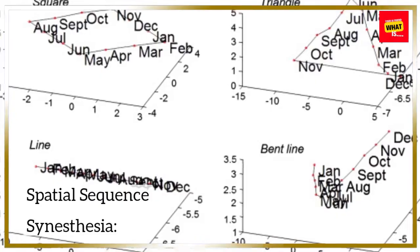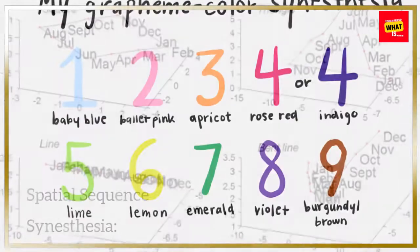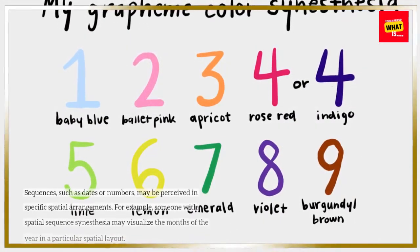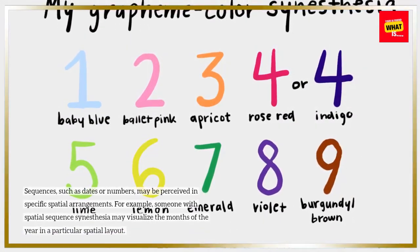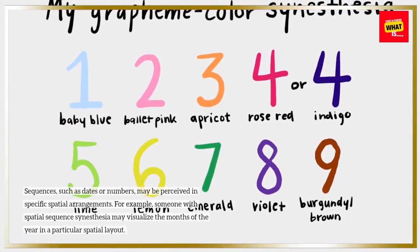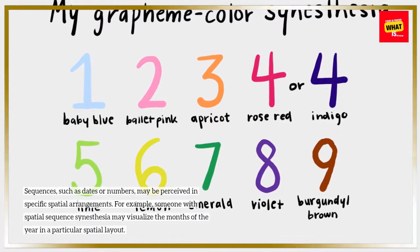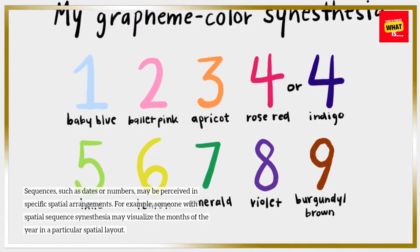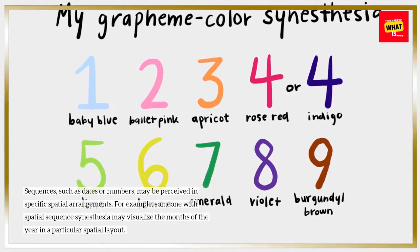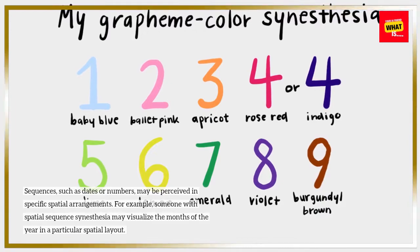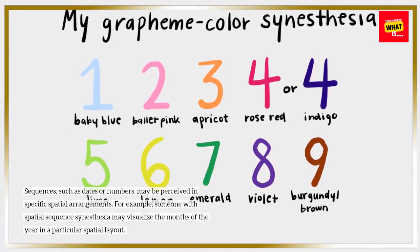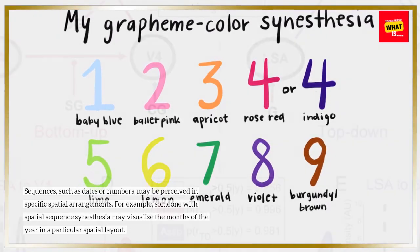Spatial sequence synesthesia is another form where sequences, such as dates or numbers, may be perceived in specific spatial arrangements. For example, someone with spatial sequence synesthesia may visualize the months of the year in a particular spatial layout.